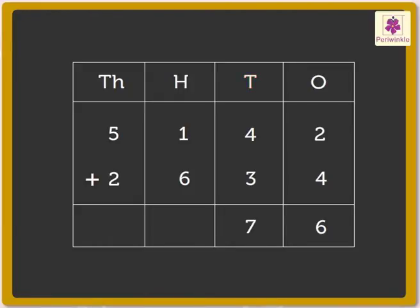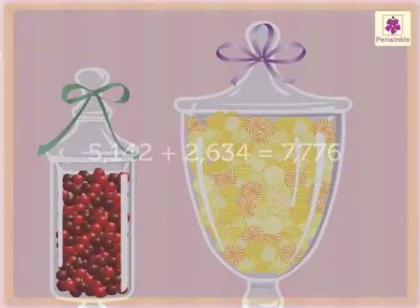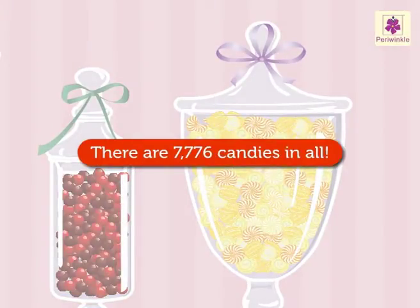Further, add the numbers in the hundreds column: 1 and 6. We get 7, which we write in the hundreds column. Finally, add the numbers in the thousands column: 5 and 2. Again, we get 7, which we write in the thousands column. Hence, the sum of 5,142 and 2,634 is 7,776. Therefore, there are 7,776 candies in all.